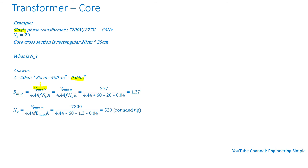Using the same formula but replacing V_rms secondary with V_rms primary and number of turns in the secondary with number of turns in the primary, and rearranging, the number of turns in the primary equals V_rms primary divided by 4.44 times frequency times B_max times cross-section area of the core. Plugging in the numbers gives 520 turns.